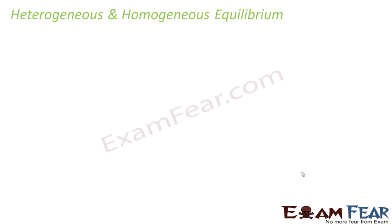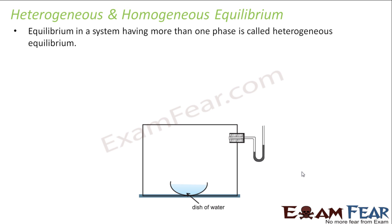So what is heterogeneous and what is homogeneous equilibrium? Equilibrium in a system having more than one phase is called heterogeneous equilibrium. In most cases we have more than one phase, and the one which has only one single phase - maybe everything is solid or everything is gas, everything is liquid - in that case it is homogeneous.